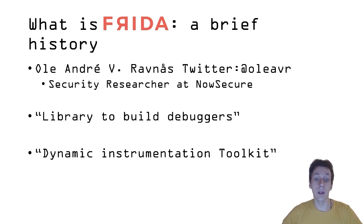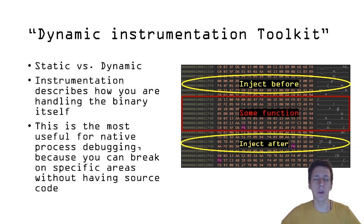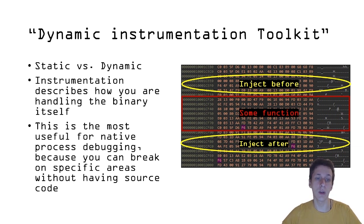Frida is a dynamic instrumentation toolkit. What does dynamic instrumentation toolkit mean? The word 'dynamic' refers to a type of analysis — static versus dynamic analysis. Static analysis is where you don't run the code that you're looking at, and dynamic analysis is where you do run the code on the system that you're looking at.